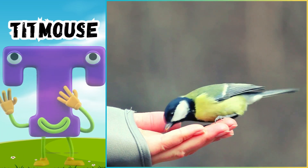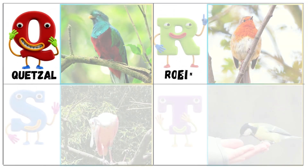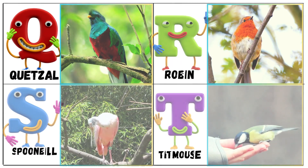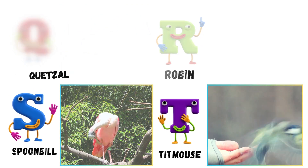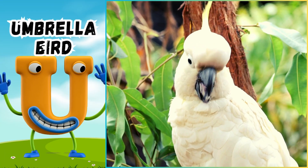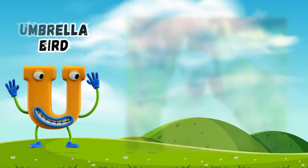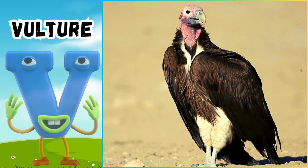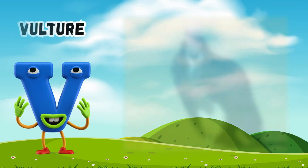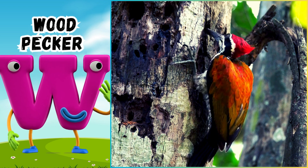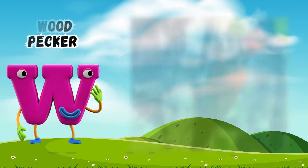T is for Titmouse. Titmouse. U is for Umbrella Bird. Umbrella Bird. V is for Vulture. Vulture. W is for Woodpecker. Woodpecker.